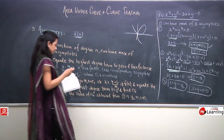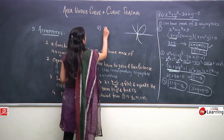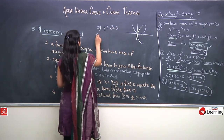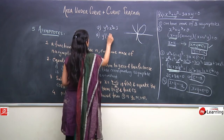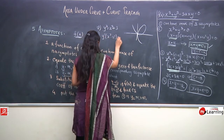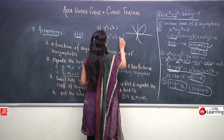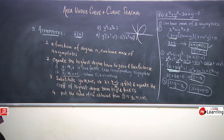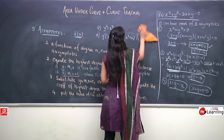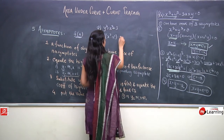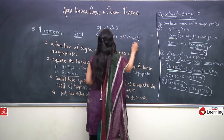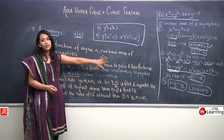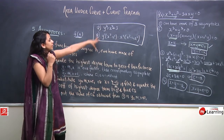Now I want you to find asymptotes for two curves: first, y³ = x²(x + 2); second, y²(x² - a²) = x²(x² - 4a²). Use the same standard steps to find the asymptotes for these two curves.